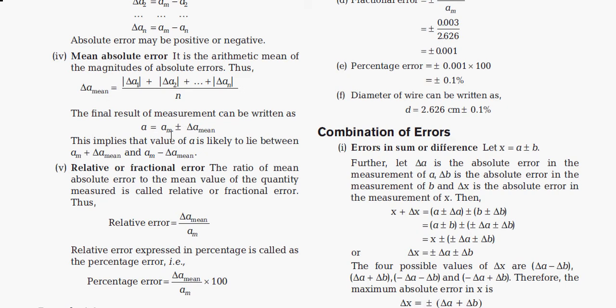The final result of the measurement can be written as a = a_m ± Δa_mean, meaning the value of a lies between (a_m + Δa_mean) and (a_m − Δa_mean). Relative or fractional error is the ratio of the mean absolute error to the mean value: relative error = Δa_mean / a_m. Percentage error is found by multiplying the relative error by 100.